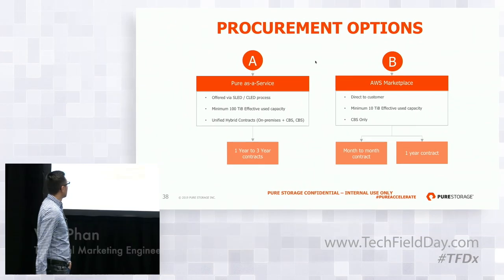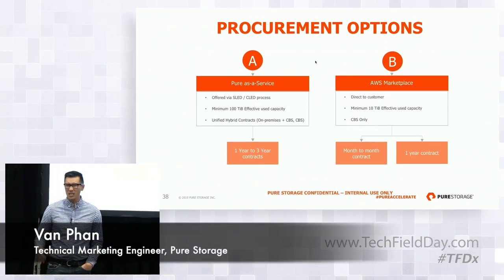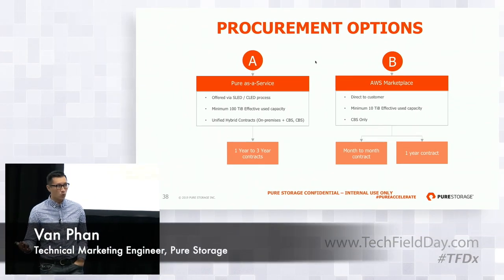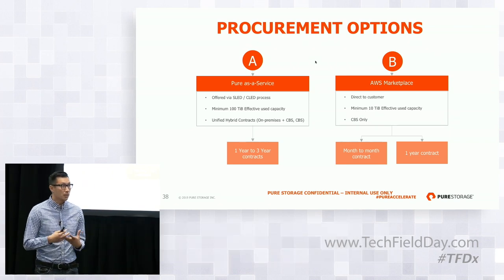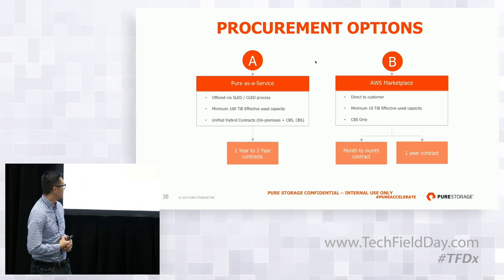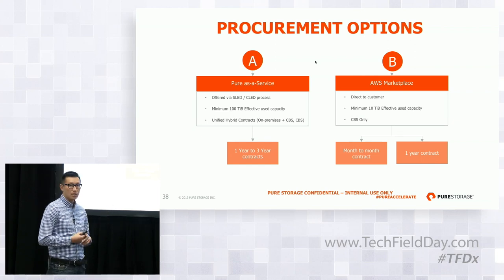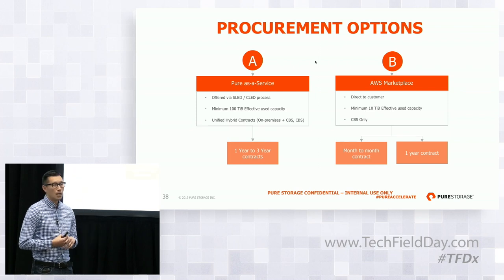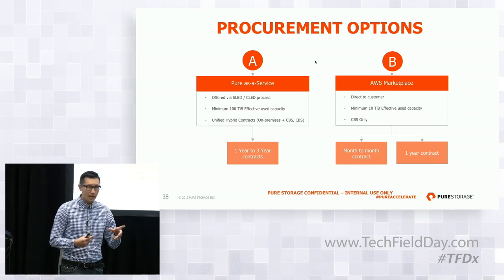We'll start with the procurement options. We have lots of customers out there who have various requirements, so we want to be flexible for our customer base. We have two options. The first option is Pure as a Service, which is what Kanawha alluded to earlier and I'll go into the details of that next.